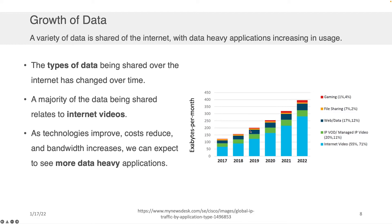What comes with supporting all of these incredible plethora of activities is a growth in data. The types of data being shared over the Internet have changed over time, as shown in the distribution on the right-hand side. A majority of the data being shared relates to Internet videos, and it has for at least the last six years or so.